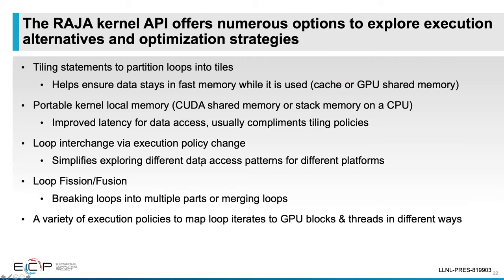The Raja kernel API offers numerous options to explore execution alternatives and optimization strategies. There are tiling statements, which break an iteration space into tiles to ensure data stays in fast memory while being used. There's access to portable kernel local memory — CUDA shared memory on NVIDIA GPUs, or stack memory on CPU. There are capabilities for loop interchange via execution policy changes, support for loop fission and fusion, and for GPU programming, a variety of policies to map loop iterates to GPU blocks and threads in different ways.